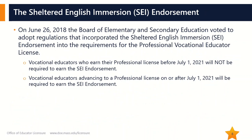On June 26, 2018, the Board of Elementary and Secondary Education voted to adopt regulations that incorporated the Sheltered English Immersion Endorsement into the requirements for the Professional Vocational Technical Educator license. However, this new SEI requirement for the professional license will not go into effect until July 1, 2021. Therefore, if a vocational educator is able to earn their professional license before July 1, 2021, earning the SEI Teacher Endorsement will not be a requirement. If a vocational educator will be earning their professional license on or after July 1, 2021, possession of the SEI Endorsement will be a requirement.